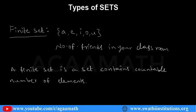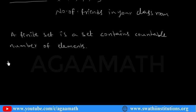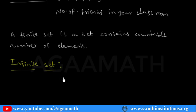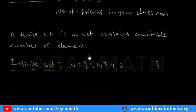We also have an infinite set. So what is an infinite set? If a set contains an uncountable number of elements — meaning you cannot count the number of elements present in a set — for example, the set of natural numbers: 1, 2, 3, 4, 5, 6, 7, and so on. The number of elements in this set are uncountable; we cannot count them because there are infinite elements. So that is why this set is said to be an infinite set.